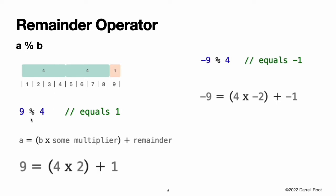Here's how the remainder operator works. To calculate 9 % 4, you first work out how many fours will fit inside nine. You can fit two fours inside nine, and the remainder is one. In Swift, this would be written as 9 % 4 equals 1. To determine the answer for a % b, the percent operator calculates the following equation and returns remainder as its output: a equals b times some multiplier plus remainder, where some multiplier is the largest number of multiples that b will fit inside a. Inserting nine and four into this equation yields nine equals four times two plus one.